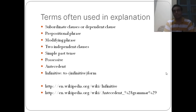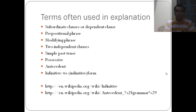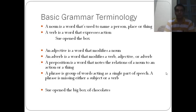These are some of the tough terms used in explanations of sentence correction questions: subordinate clause, dependent clause, preposition, modifying phrase, independent clause, simple past tense, possessive, antecedent, infinitive. We are going to look at these a little bit later, very scientifically, systematically, logically, and intuitively — to understand how they are important in the language we use day-to-day and what the GMAT board expects from us.